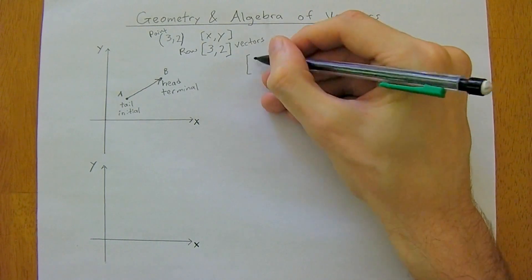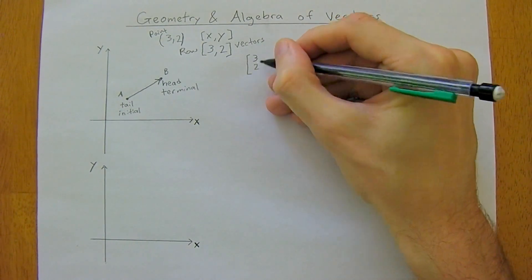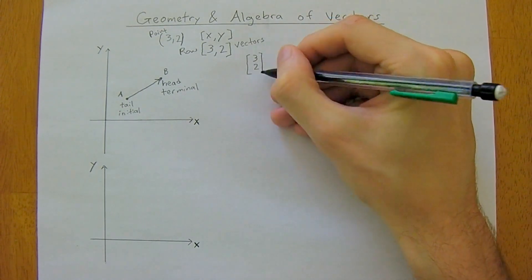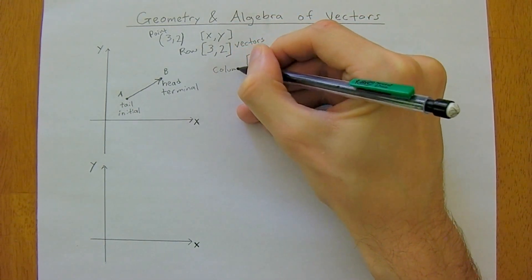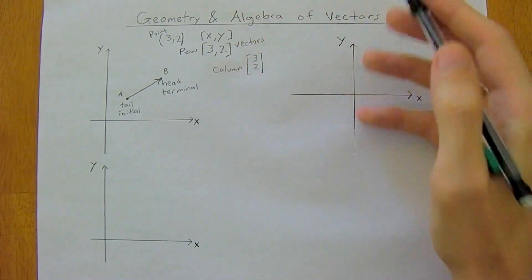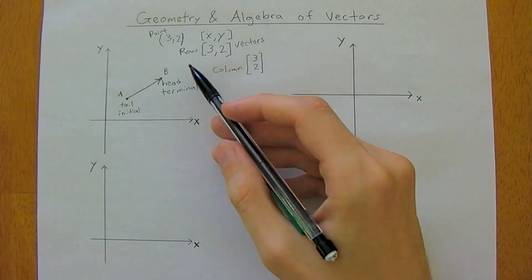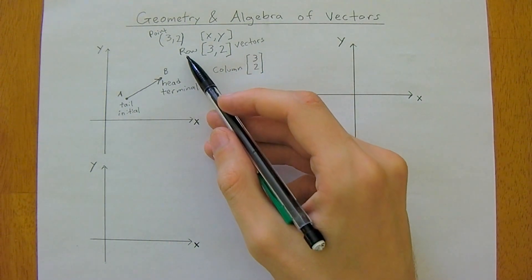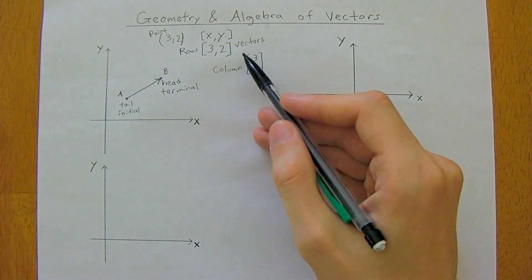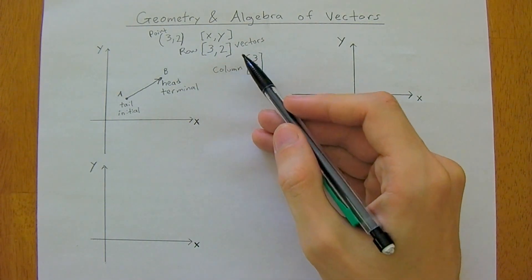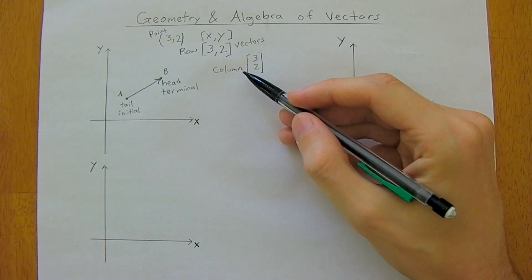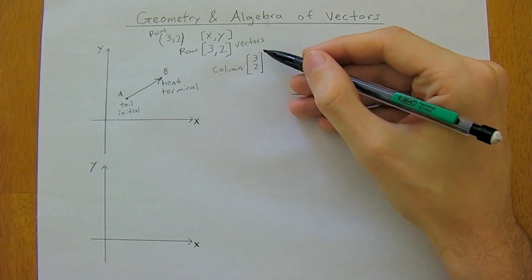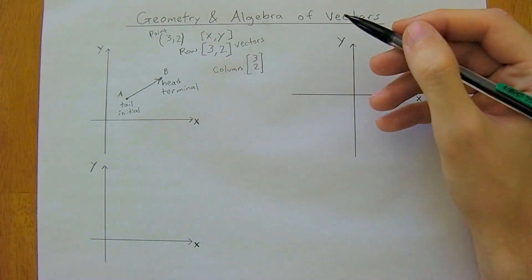We could also represent this with a column vector, so then it would just be 3, 2 in a column. The way I like to think about it is if you're in a rowboat rowing along you're headed horizontally, but if you think of the famous Roman columns in their buildings, their columns are vertical.